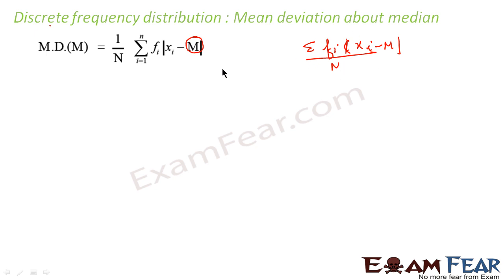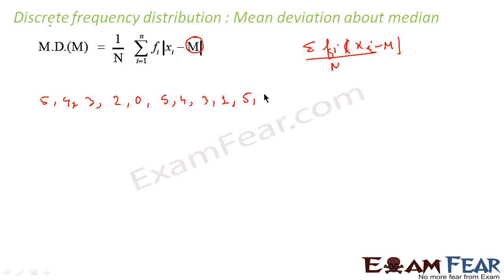Now let me first explain how to find the median. Let's say we have data where students obtained marks: 5, 4, 3, 2, 0, 5, 4, 3, 1, 5, 3, 0. That gives us 12 students total, so n equals 12.